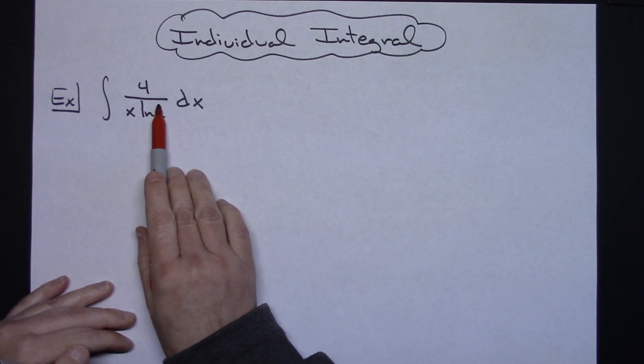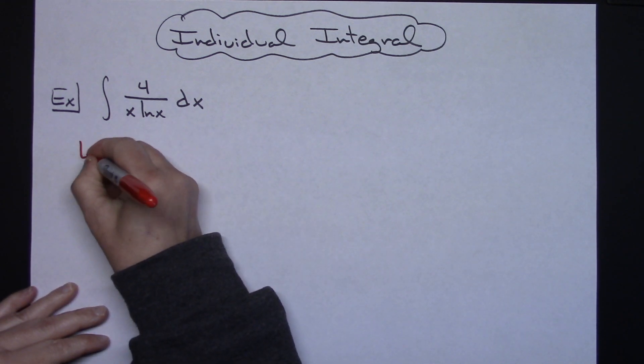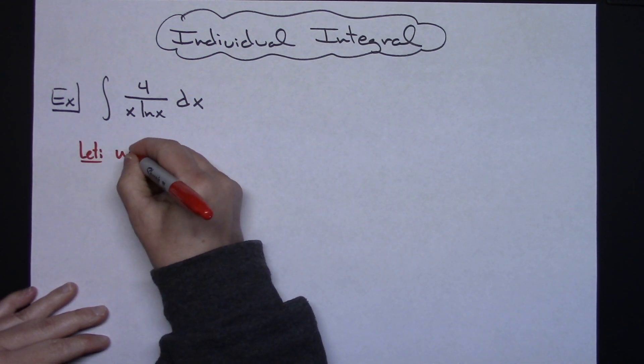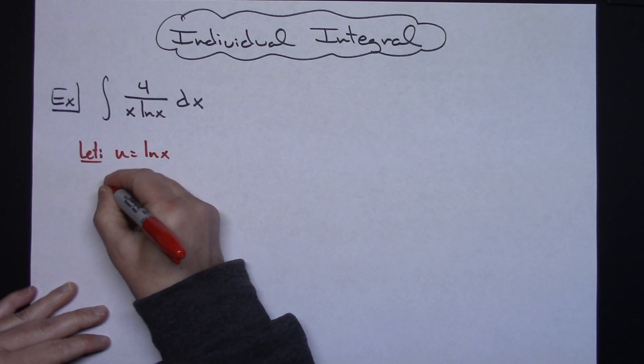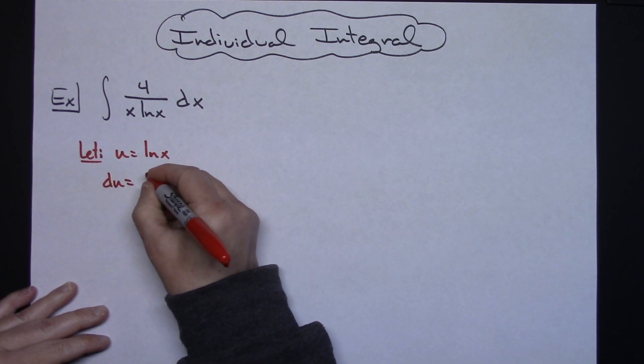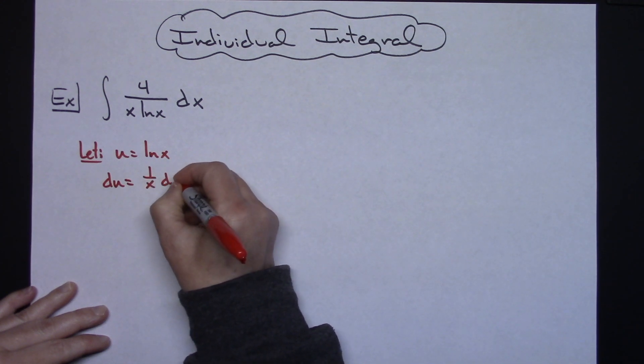I'm going to take a look at that denominator and I am going to let u be that natural log of x. So I'm going to let u equal natural log of x. I'm going to then take the derivative of both sides: du is equal to 1 over x dx.